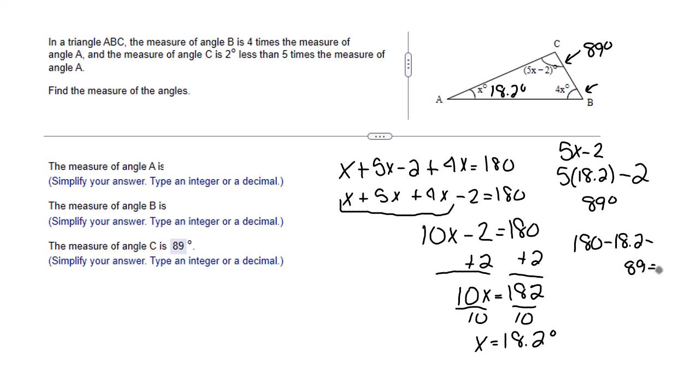And that will give it to us. Or we know that angle B is 4X. All we need to do is put 18.2 in for X and multiply. When we do that, we end up with 72.8 degrees. And we did it!